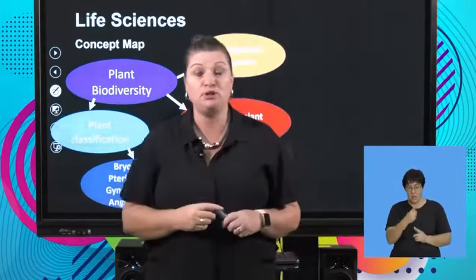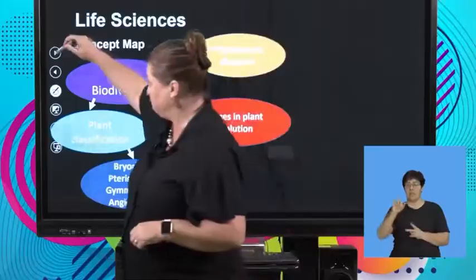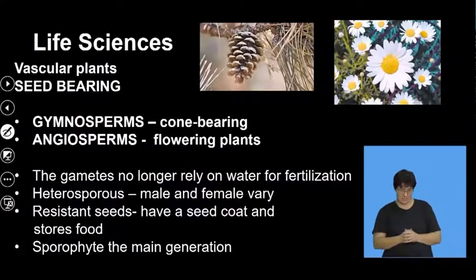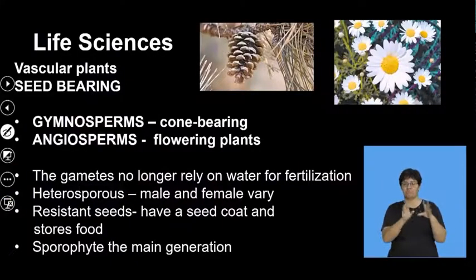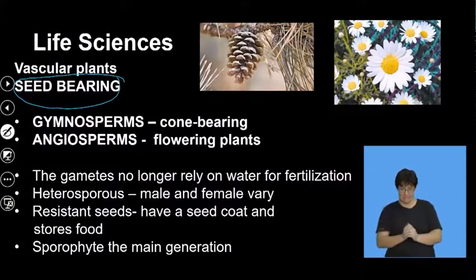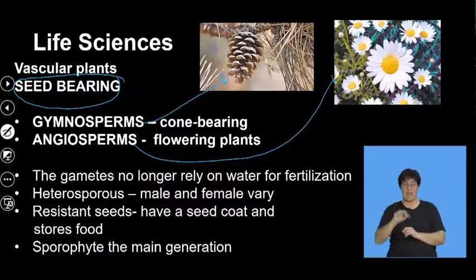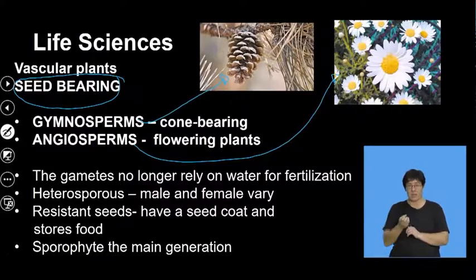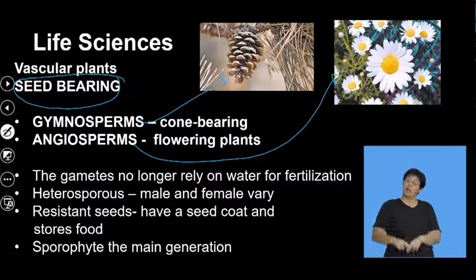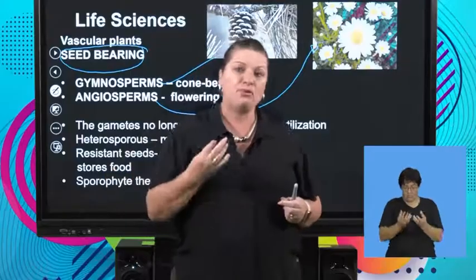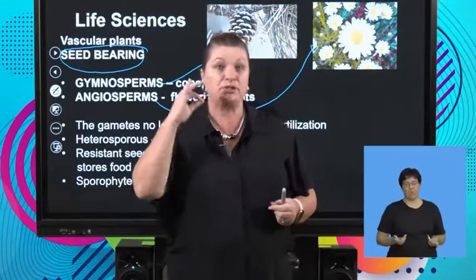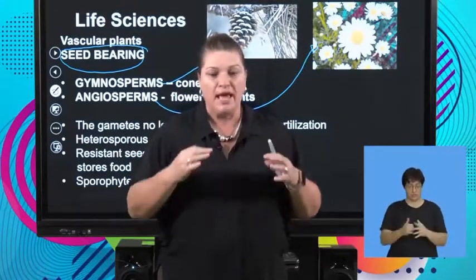Now we're going to look at the next two groups: gymnosperms and angiosperms. Both of them have seeds. Gymnosperms are characterized by cones; angiosperms are characterized by flowers. Neither of these groups relies on water for fertilization — they've adapted to life on land, to a terrestrial environment.